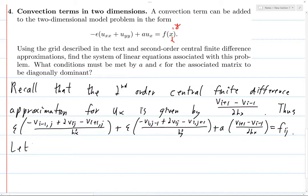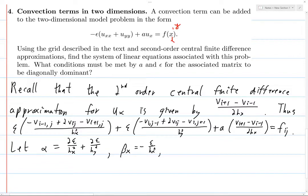Before we make our matrices, we're going to find some useful constants. We define α = 2ε/h_x² + 2ε/h_y², which is the coefficient of v_{i,j} in the above formula. Then β_x = −ε/h_x², and similarly β_y = −ε/h_y². And we have γ = a/(2h_x), which is the coefficient for the v_{i+1,j} and v_{i−1,j} terms corresponding to the first derivative approximation.